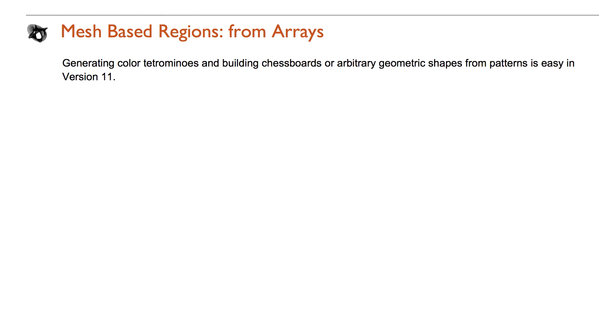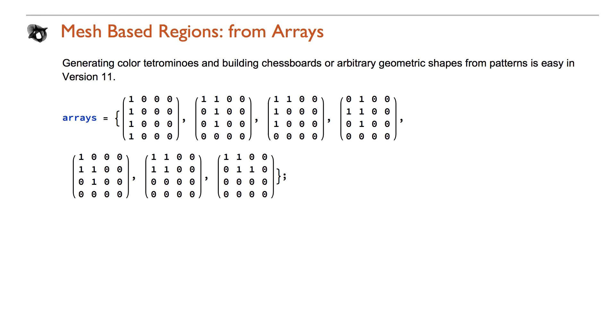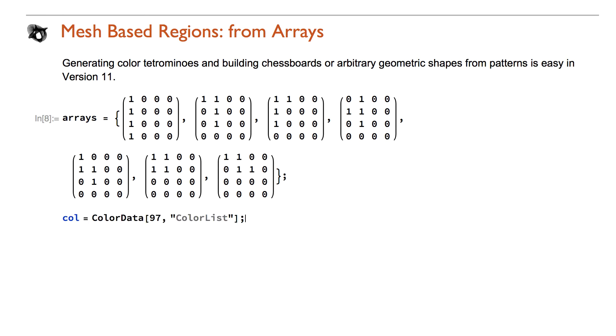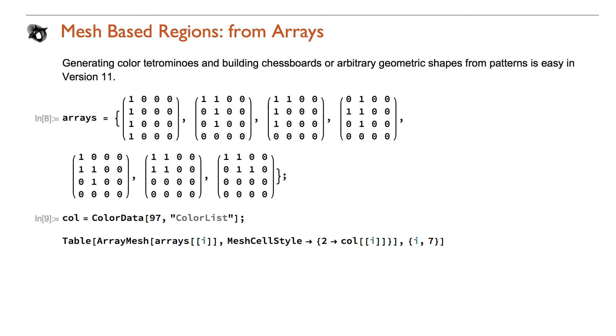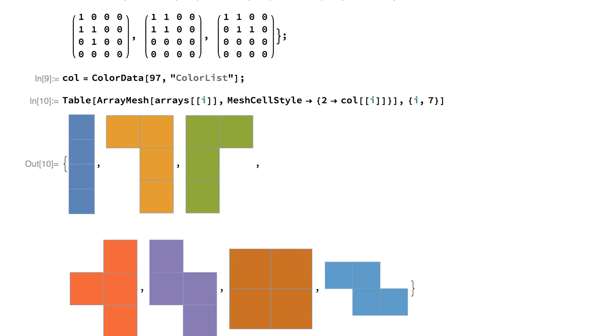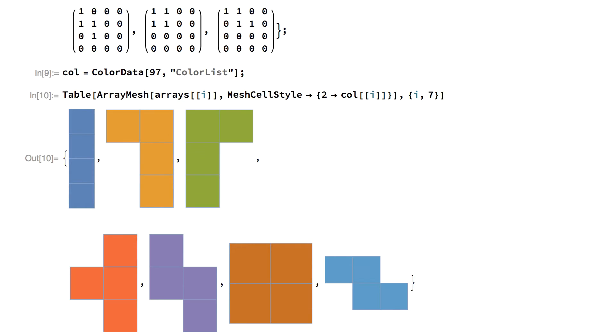New mesh regions can easily be created from arrays with the new function ArrayMesh. Here's an example of how to generate color tetrominoes.